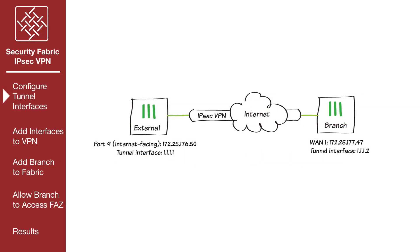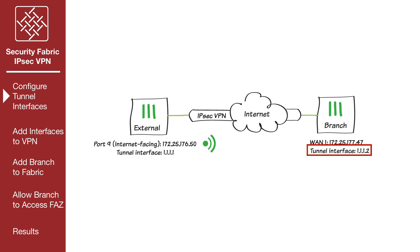Now configure the tunnel interfaces. In order for FortiTelemetry traffic to flow securely through the VPN, FortiTelemetry traffic must travel between the tunnel interfaces, with the interface on External listening for this traffic. The tunnel interfaces require IP addresses. In this example, the external tunnel interface is assigned the IP address 1.1.1.1, and the branched tunnel interface is assigned the IP address 1.1.1.2.